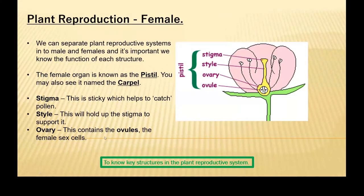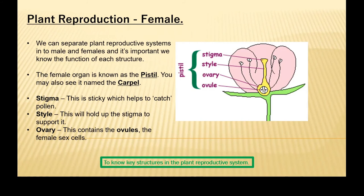We have the ovary. You may have heard that when describing reproductive systems in humans. And this will contain the ovule, which is the female sex cell. There's a very important word you can use that takes your answers up to a higher level, and that is called gametes.